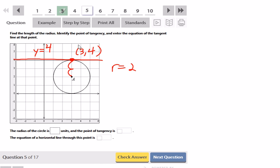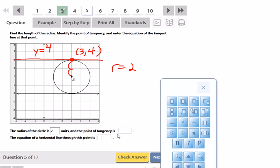The radius of the circle is two units. The point of tangency is at 3 comma 4 and it's a horizontal line that's passing through y equals 4.